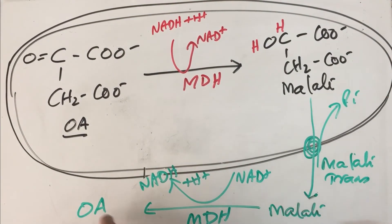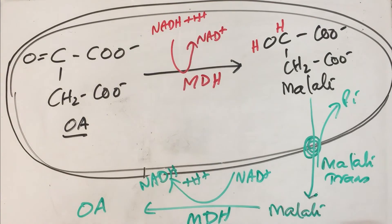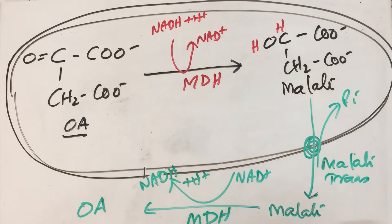We now have malate in the cytoplasm — an equivalent of oxaloacetic acid brought out of the mitochondria. The next step is to convert this malate back into oxaloacetic acid using a cytoplasmic malate dehydrogenase, converting NAD⁺ back into NADH + H⁺. This produces the oxaloacetic acid required for the next step in gluconeogenesis. Importantly, we have also brought one NADH into the cytoplasm, which is needed in the reverse reactions — specifically when converting 1,3-bisphosphoglycerate into glyceraldehyde-3-phosphate.